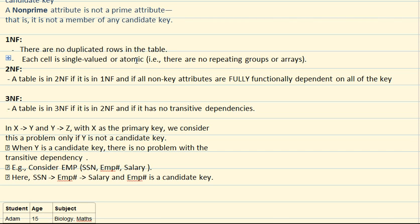The third normalization rule is that a table has to be in 2NF first, and it cannot have transitive dependencies. A transitive dependency is something like: if X determines Y and Y determines Z, then X essentially determines Z. This is not accepted in third normal form, so 3NF disallows transitive dependencies in a table.